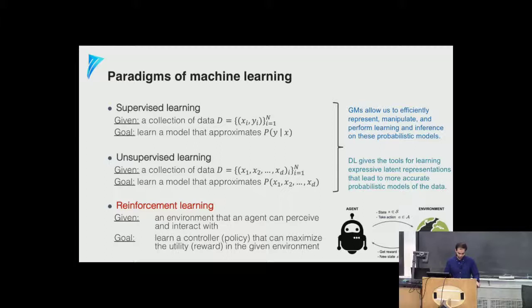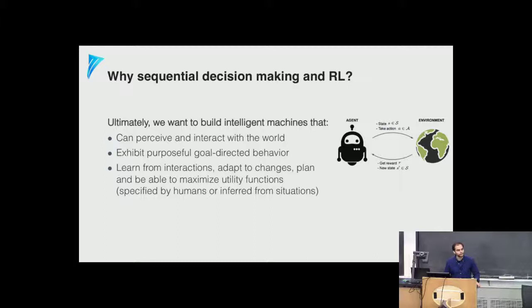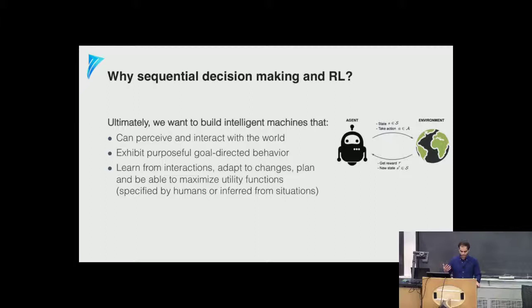Why do we care about sequential decision making and RL? While supervised and unsupervised learning are tools to build models from data to guide human decisions, with RL we have a more futuristic view: we'd like to build an intelligent machine that can interact with the world, make decisions on its own, and optimize certain utility functions that we specify or that it infers.